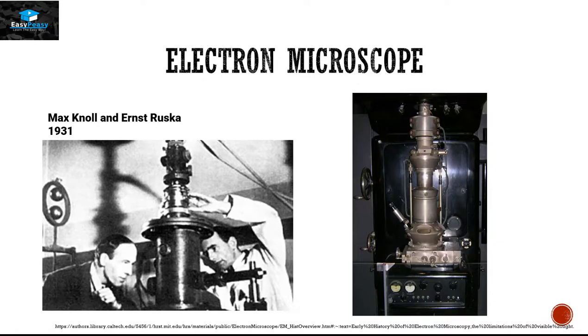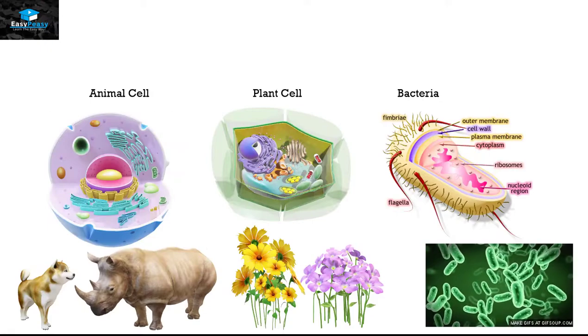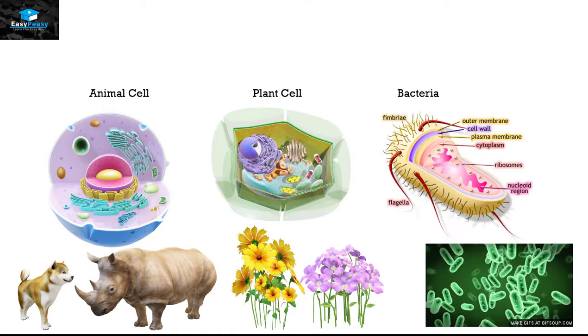Then in 1931, Max Knoll and Ernst Ruska invented the electron microscope. In the electron microscope, sunlight is replaced by electrons to visualize smaller substances, and this finally gave us the opportunity to see what is present inside the cell.